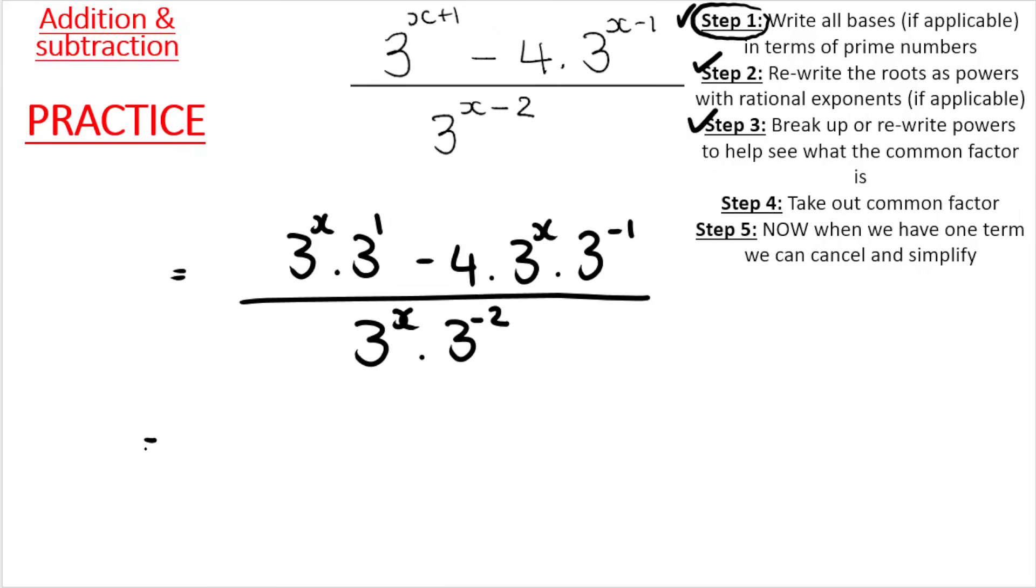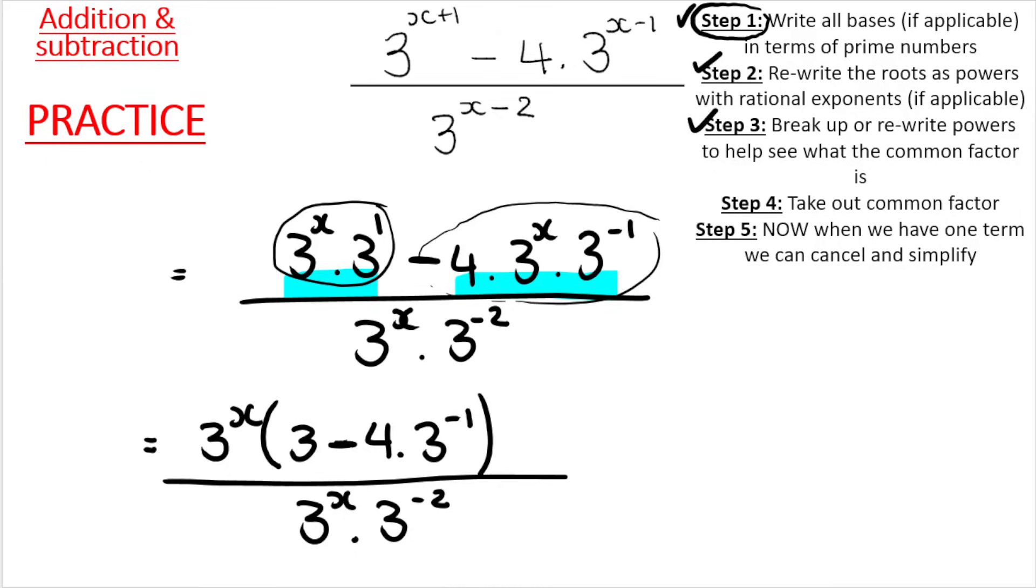Then we're going to take out the common factor. Now, I have two terms at the top. What is the common factor? 3 to the power of x is appearing in both of them. So 3 to the power of x. Then you open your leftover brackets. Take the first term divided by 3 to the power of x. What are you left over with? 3 to the power of 1, or 3. Take your second term divided by 3 to the power of x. You're left with negative 4 multiplied by 3 to the power of negative 1. This negative drops down into the bracket, but what stays between the 4 and the 3 to the power of negative 1 is a multiplication. Then at the bottom, I don't need to factorize because it's one term. So 3 to the power of x multiplied by 3 to the power of negative 2.